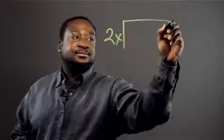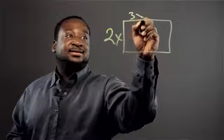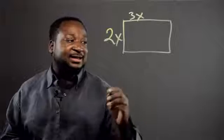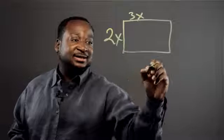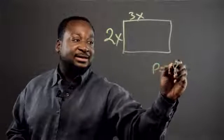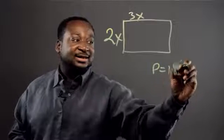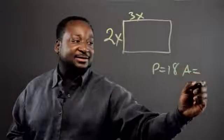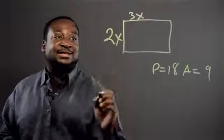Let's say for example we have the rectangle 2x by 3x and let's say we know the perimeter, the perimeter is 18 and we know the area is equal to 9 and we can basically solve this.